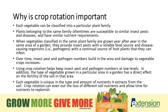Over time, insect pest and pathogen numbers build in an area and damage to vegetable crops increases. Using crop rotation helps keep insect pest and pathogen numbers at low levels. In addition, each vegetable is unique in the type and amount of nutrients it extracts from the soil, so crop rotation can even out the loss of different soil nutrients and allow time for nutrients to replenish.